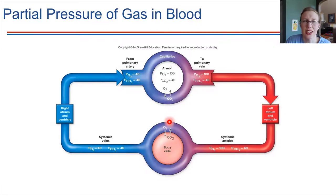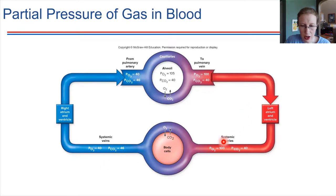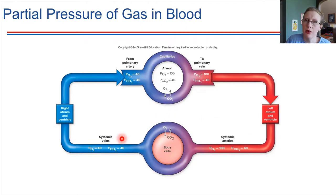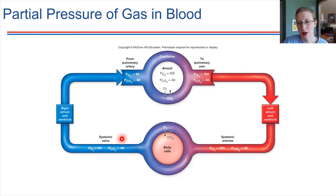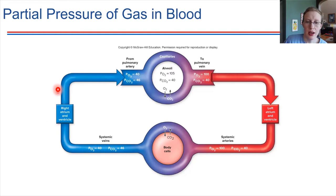Traveling through an artery, we make it over to the body cells, and there's another gas exchange that takes place — oxygen diffuses into the cells, and the cells give up their waste product, carbon dioxide. Look at the partial pressures: oxygen used to be at 100 and is now down to 40; carbon dioxide used to be at 40 and has come up to 46. The small change in CO2 relates to the effects of buffers — blood has a buffer that helps absorb the carbon dioxide. That blood, now traveling through a vein, makes its way back to the right atrium, then the right ventricle, and back to the lungs to start the whole cycle over again. These partial pressures are what drive gas exchange throughout this whole circuit of circulation.